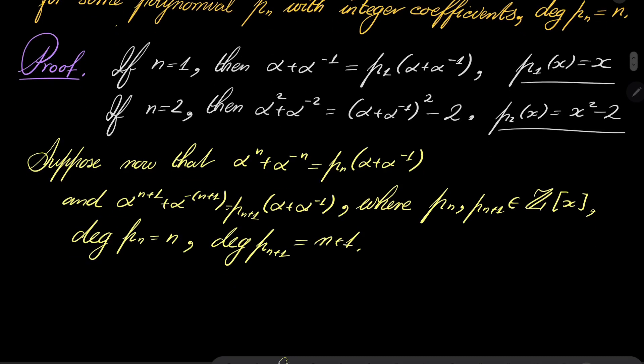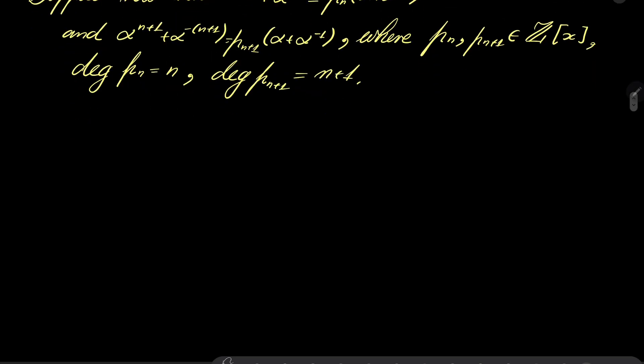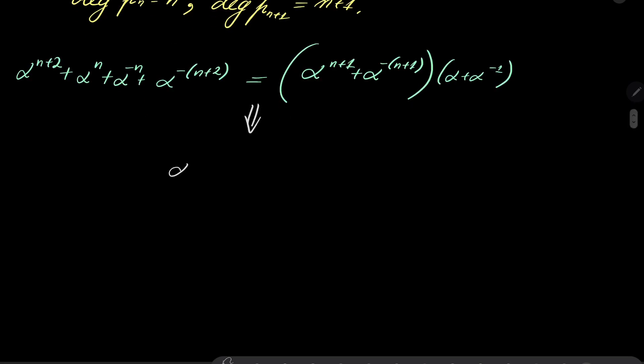We will investigate what happens at n+2. Now, notice the following. We can do the following trick: let's consider (α^(n+1) + α^(-n-1)) times (α + α^(-1)). Well, if we multiply it, we will get α^(n+2) + α^n + α^(-n) + α^(-n-2), which means that α^(n+2) + α^(-n-2) can be written in what way?